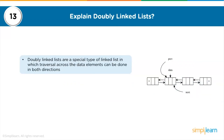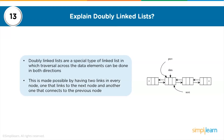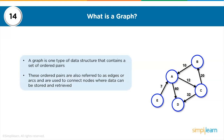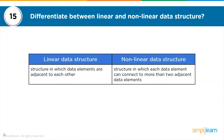What are doubly linked lists? Doubly linked lists are a special type of linked list in which traversal across data elements can be done in both directions. This is made possible by having two links: one connecting to the next node and another connecting to the previous node. What is a graph? A graph is a data structure that contains a set of ordered pairs, also referred to as edges or arcs, used to connect nodes where data can be stored or retrieved.